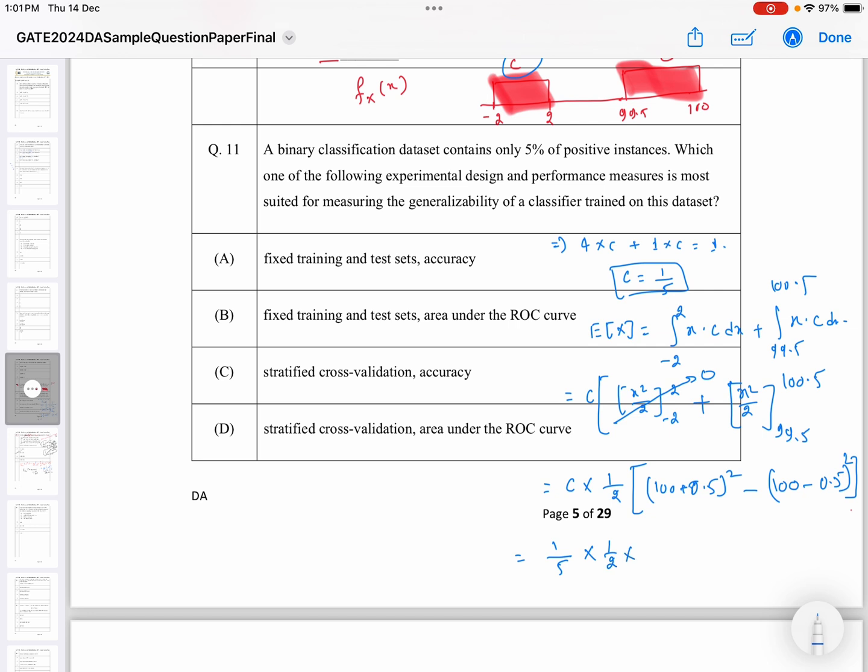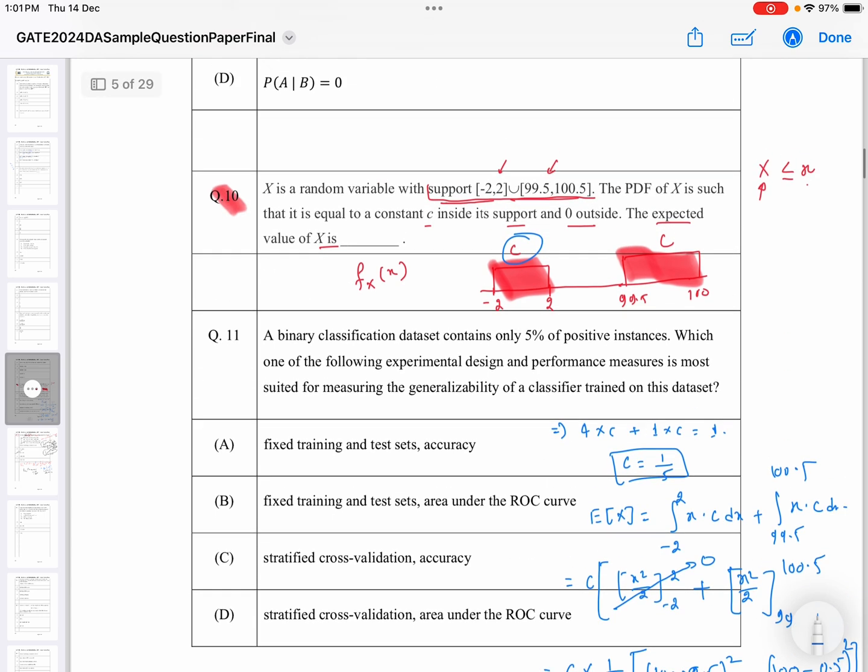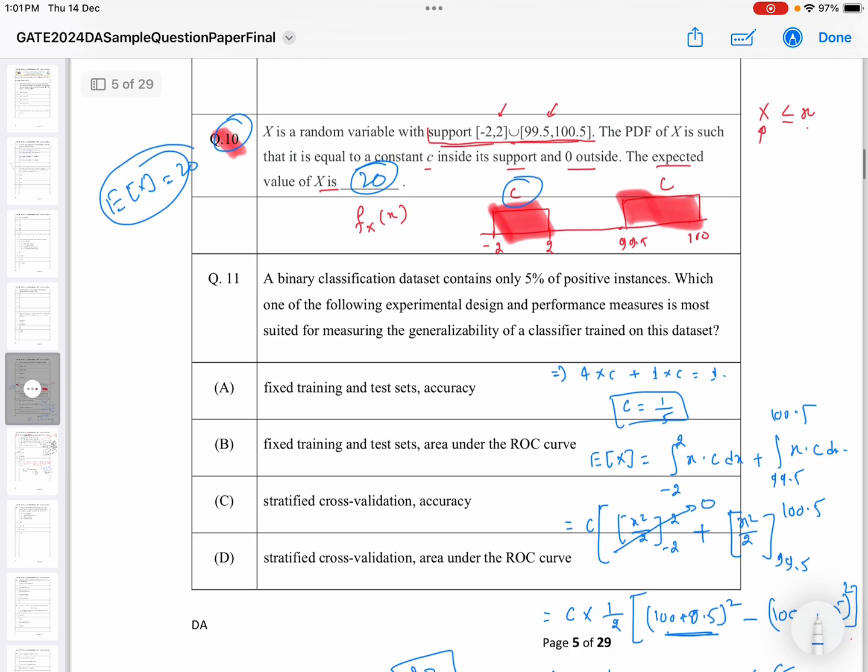So here if we put the value of C that is 1/5, it will be 1/5 times 1/2 times... that will be 4 times 100 times 0.5. From here we get 100, so this 100 will get cancelled. So overall we are going to get 20. So the expected value of X for this question number 10 is 20. The correct answer for this is 20. Okay, that was all, thank you.